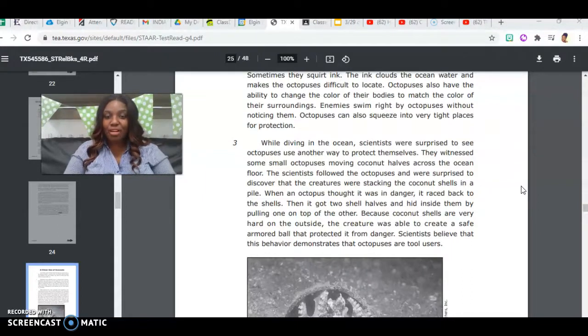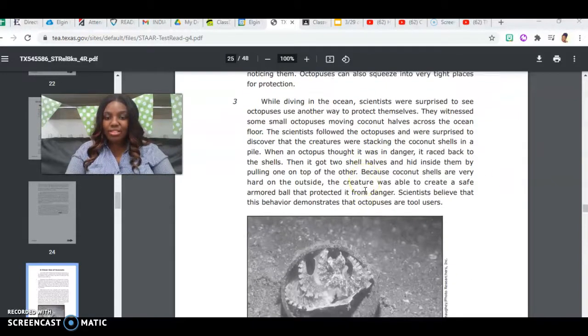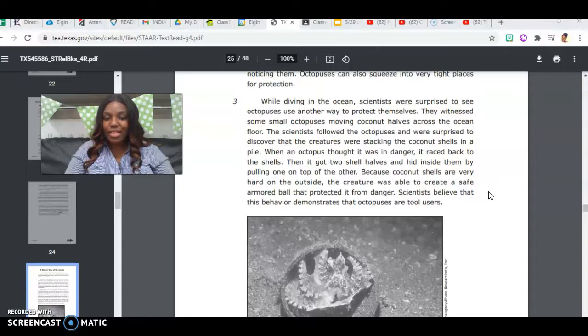When an octopus thought it was in danger, it raced back to the shells. Then it got two shell halves and hid inside them by pulling one on top of the other. Because coconut shells are very hard on the outside, the creature was able to create a safe, armored ball that protected it from danger.